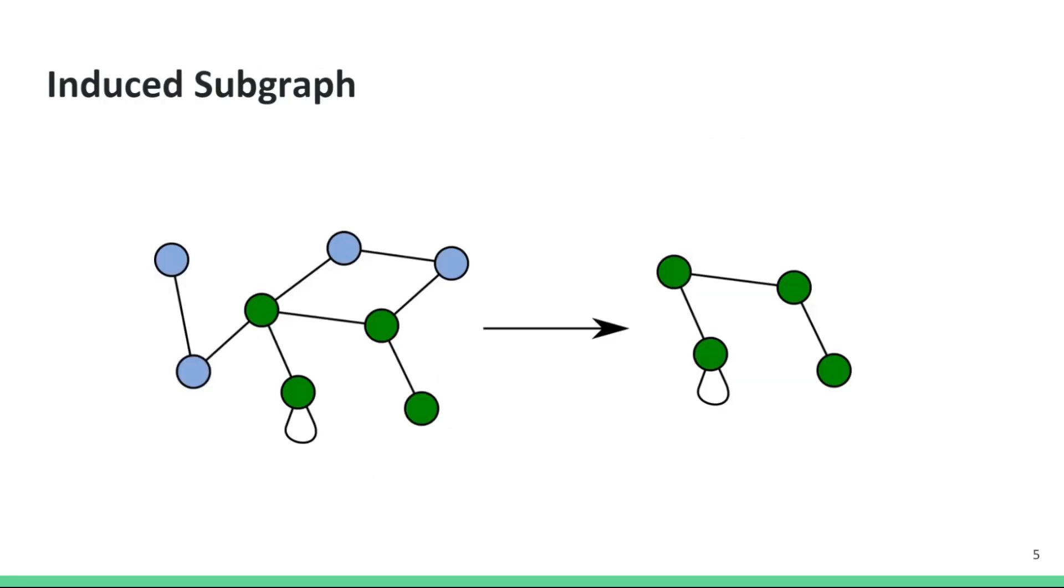Sometimes it is useful to only work with part of a graph. For example, if we want to visualize a small subset of a graph or to process graphs that are too large to fit in memory. An induced subgraph consists of a subset of nodes from the original graph as well as the edges between them. An example of this is shown here where the induced subgraph for the nodes colored in green is shown on the right.